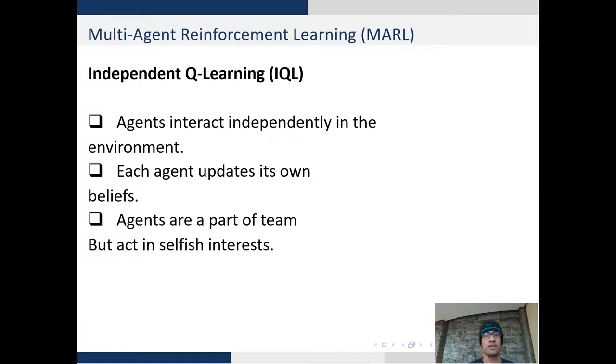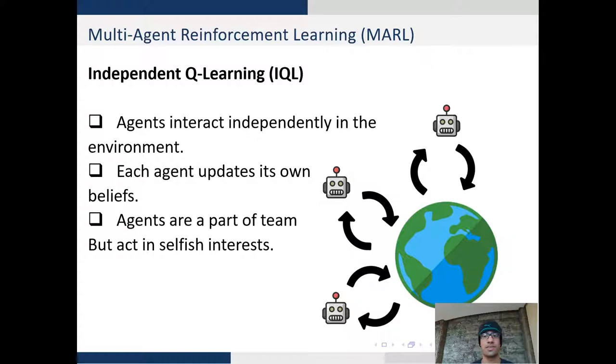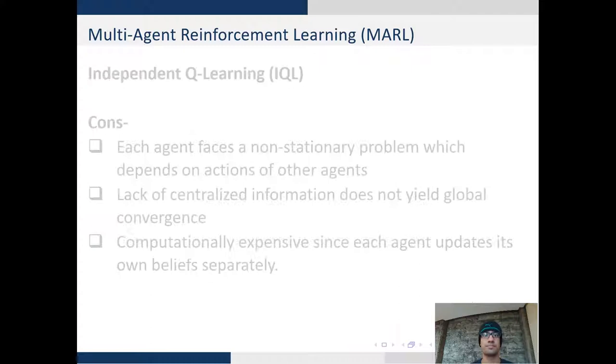So let's begin by independent Q-learning. This is a setup where each agent interacts in the environment independently and updates its own beliefs. Agents are part of a team but they generally act in selfish interest. They just have to interact in the environment and need not cooperate necessarily.